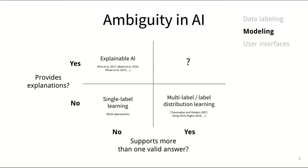When it comes to developing AI models from this labeled data, many approaches use what's called single label learning, where each input example is simply mapped to one output label. The field of explainable AI is concerned with making sure that their output is generated in ways that can be understood by humans.